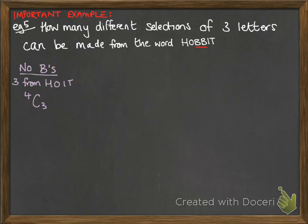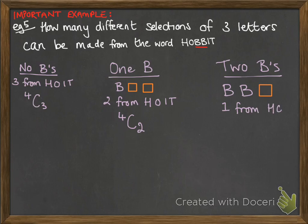The first case: we pick no B's at all. We're choosing three letters from H, O, I, or T. That's ⁴C₃. The next case: we pick one B. That means we've got a B and two spaces to fill. We need to pick two from H, O, I, T. That'd be ⁴C₂. The third case: we've got two B's. We'd have two B's and one space to fill, so we're choosing one from H, O, I, T. That'd be ⁴C₁. We add each of those together to get our total number of ways to select three letters from the word HOBBIT.